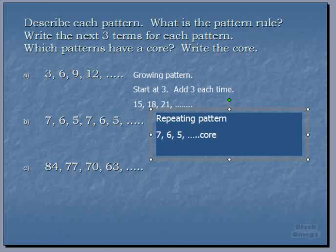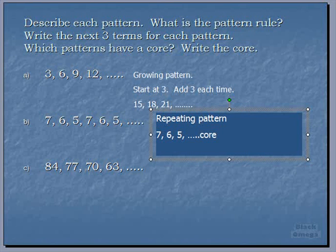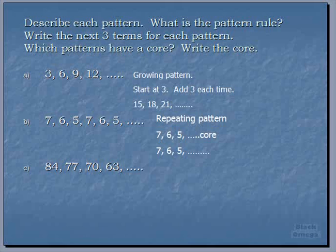The next three terms, if it's a repeating pattern and we see our core, our next three terms, you guessed it, 7, 6, 5. And that can go on and on. Why? It doesn't shrink. It doesn't grow. It just repeats itself. And that's why it is a repeating pattern. Excellent work.